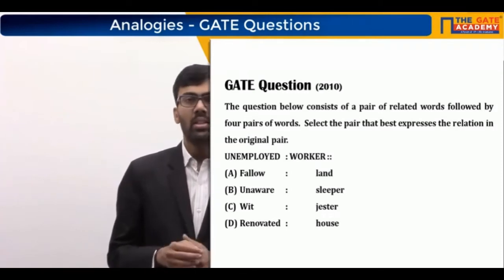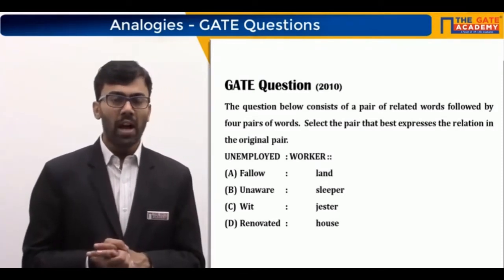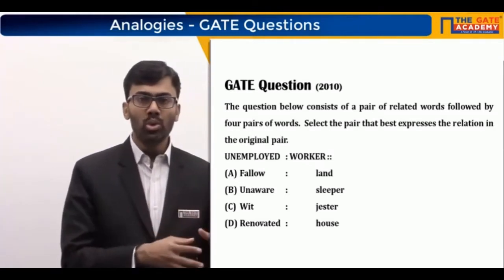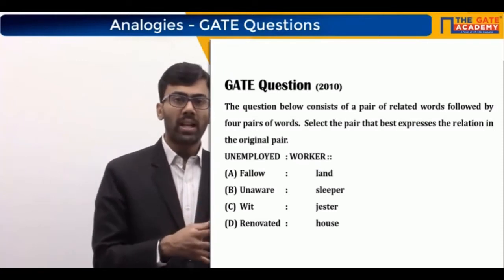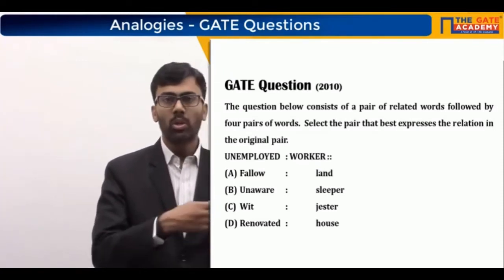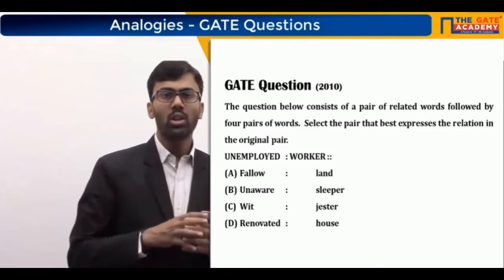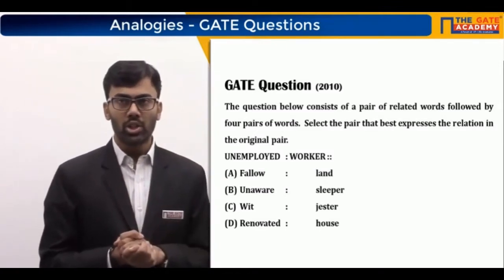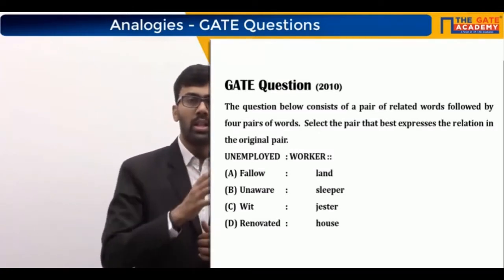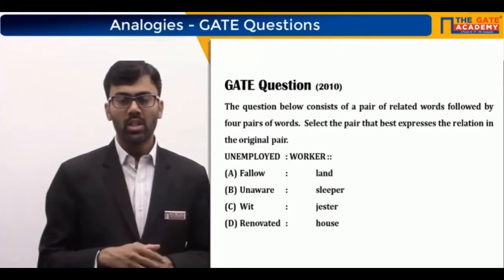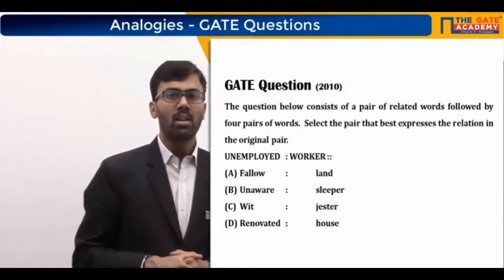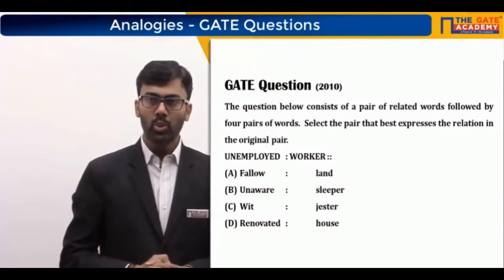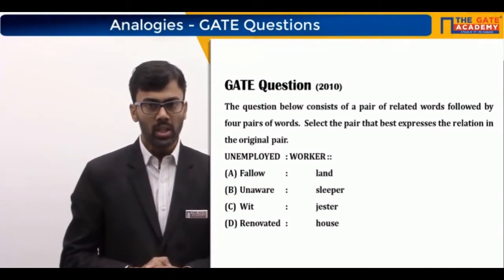Option A is 'land : fallow.' The word 'fallow' means something that has not been used — specifically, land that has not been dug or used for agriculture. A fallow land is land not being used for its specific purpose. Similarly, just as a worker who can work but is not put to use is called unemployed, a land not used for agriculture is fallow. The correct option is A. This question appeared in GATE 2010.